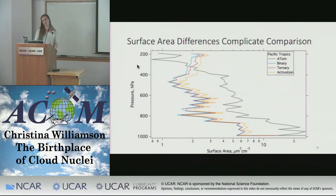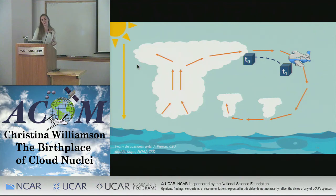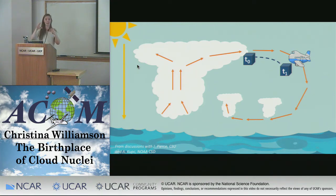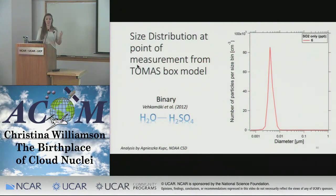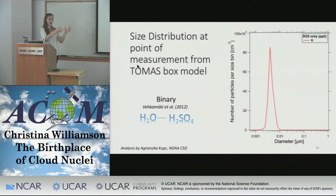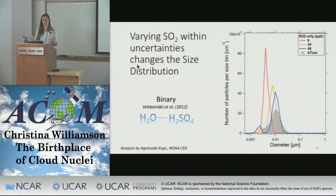Another thing we can do with the modeling is take the box model itself, which Agnieszka has been looking at. She takes the TOMAS box model from the moment the back trajectory exits the cloud, then models how particles form and grow until we measure them on the DC-8. Doing this first for just binary nucleation — sulfuric acid and water — for a given minute of flight she creates an expected size distribution assuming nucleation begins when you leave the cloud and particles grow until we measure them. This size distribution is quite dependent on the amount of SO2 in the model, varied between about 5 and 50 ppt. Comparing to the ATom data, for this specific example in the tropical upper troposphere, you actually need those higher concentrations of SO2 to explain the ATom data.